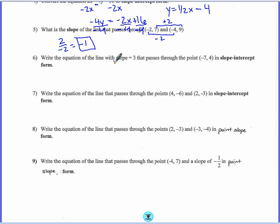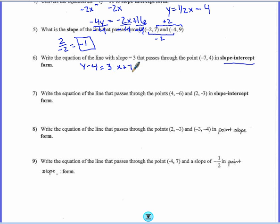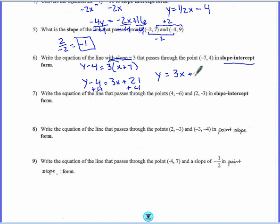Write the equation of the line with slope 3 that passes through the point (negative 7, 4) in slope-intercept form. I think the easiest thing to do is write it in point-slope and change it, so we don't have to worry about solving for b. In point-slope it would be y minus 4 equals 3 times x plus 7. Distribute: y minus 4 equals 3x plus 21. Then to get y by itself, add 4 to both sides. Y equals 3x plus 25.